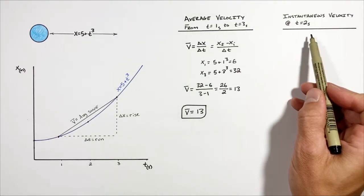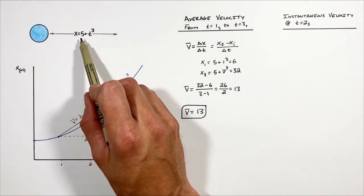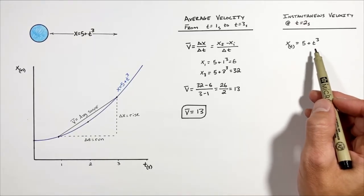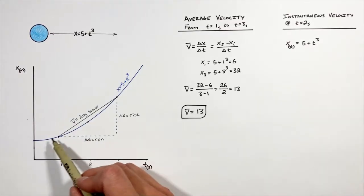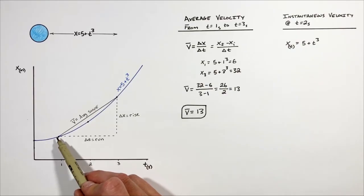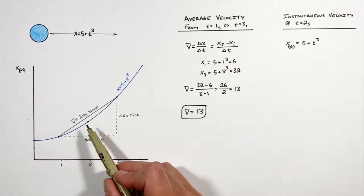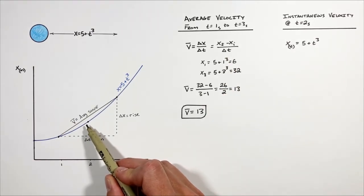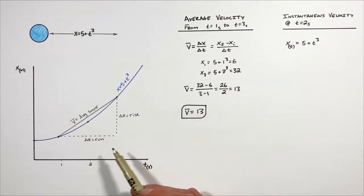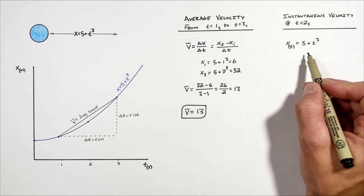Now I want to find the instantaneous velocity at a time of two seconds. To do that, we need to find the slope of this curve at a single point. When finding the slope between two points we could use the previous equation, but we can't use it at just a single point, because there is only an infinitely small change in position at that single point. That means we have to apply calculus to solve for the velocity at that point in time.